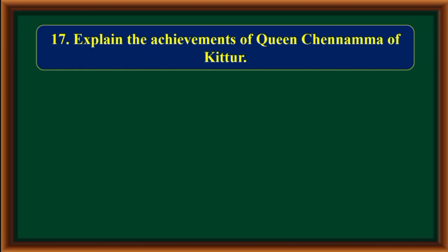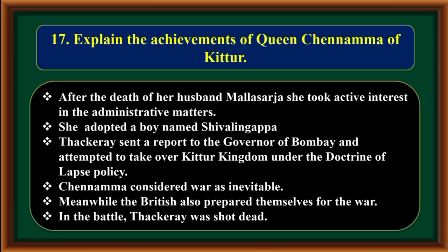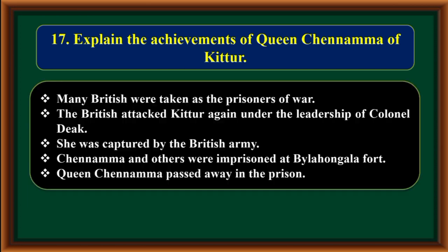Explain the achievements of Queen Channamma of Kittur. After the death of her husband Malla Sarja, she took active interest in administrative matters. She adopted a boy named Shivalingappa. Thackeray sent a report to the Governor of Bombay and attempted to take over the Kittur kingdom under the doctrine of lapse policy. Channamma considered war as inevitable. In the battle, Thackeray was shot dead and many British were taken as prisoners of war. The British attacked Kittur again under Colonel Deacon. Channamma was captured and imprisoned at Bailhongal Fort, where she passed away in prison.